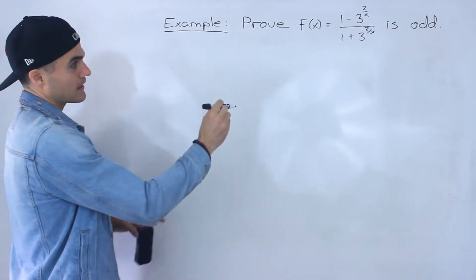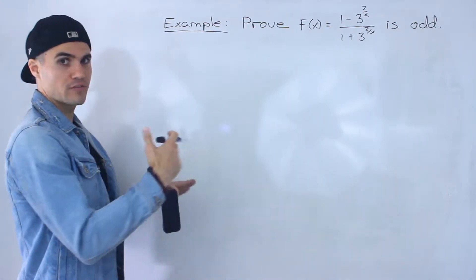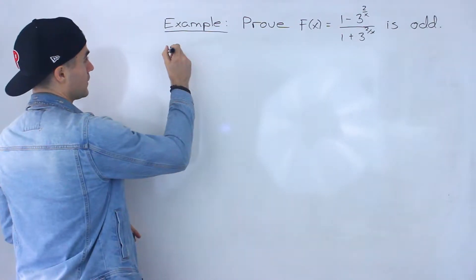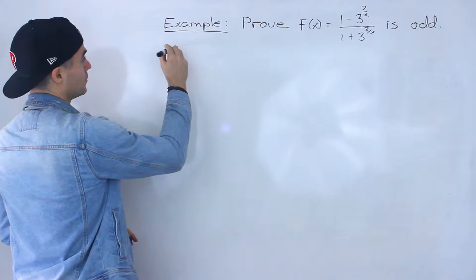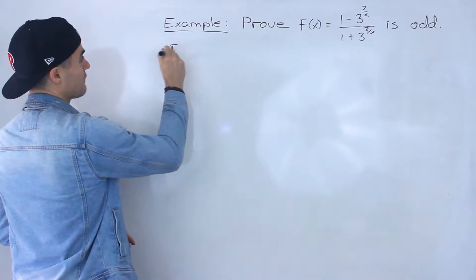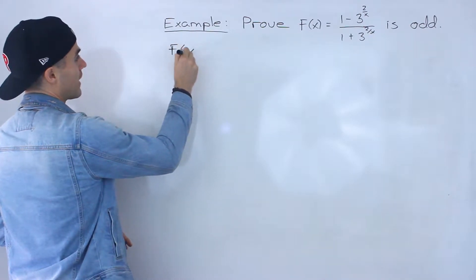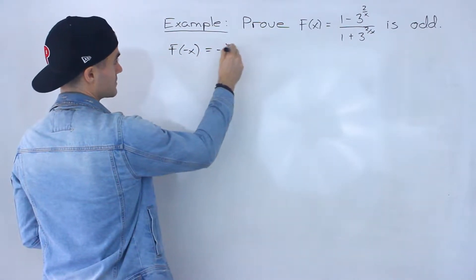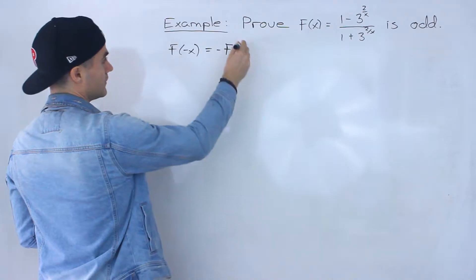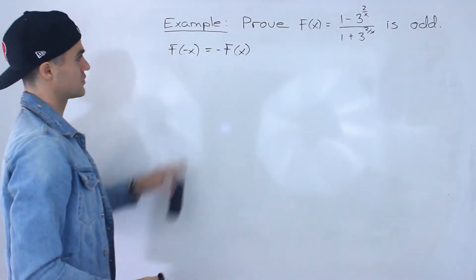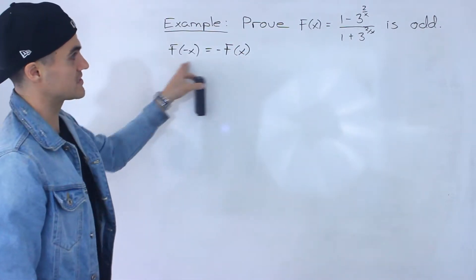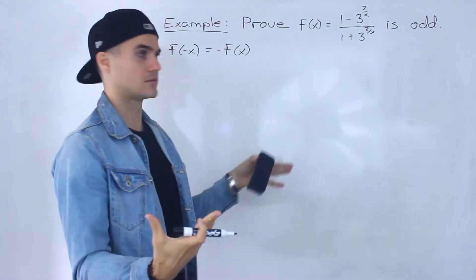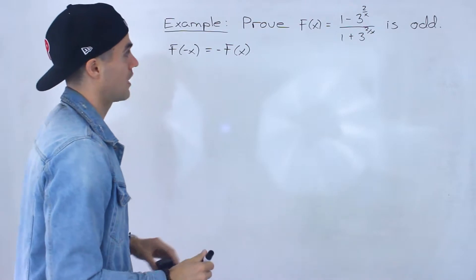We know that if we're trying to prove that a function is odd, we have to show that f(-x) = -f(x). So if we can show that this holds with this function, then we know it's odd.